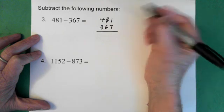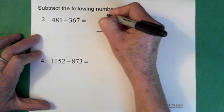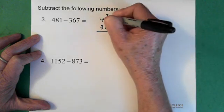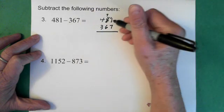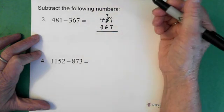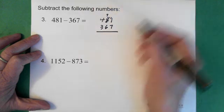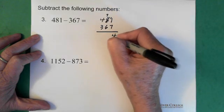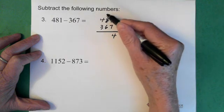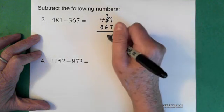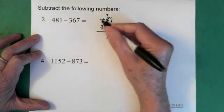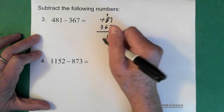So 1 minus 7 we can't do. So we borrow from the 8. So this becomes a 7 and this becomes a 1. So this is now 11 here. So we have 11 minus 7, which is 4. 7 minus 6 is 1. 4 minus 3 is 1.